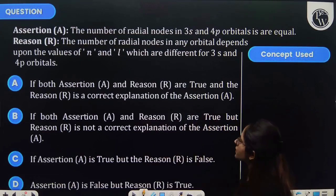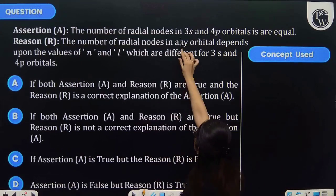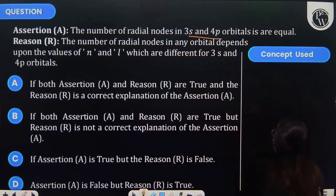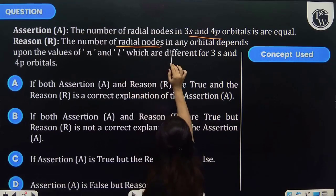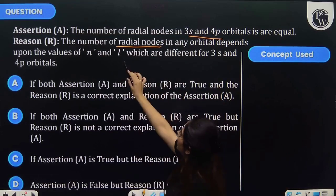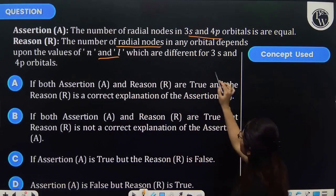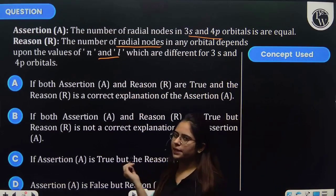Let's see this question. The question says that the number of radial nodes in 3s and 4p orbitals are equal. And then the reason: the number of radial nodes in any orbital depends on the values of n and l, which are different for 3s and 4p orbitals.